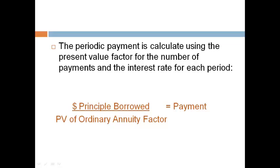A note generally requires periodic payments that cover both principal and interest. This payment is equal to the amount borrowed divided by the present value factor for the number of periodic payments and the interest rate for each payment. Present value tables are provided in your course pack at the end of the bonds section.